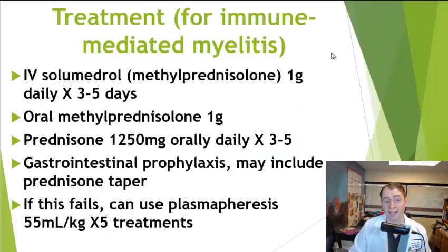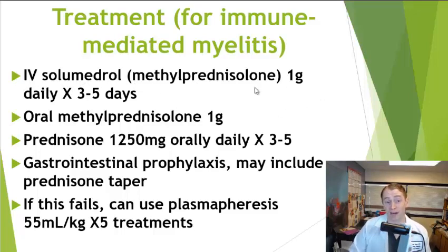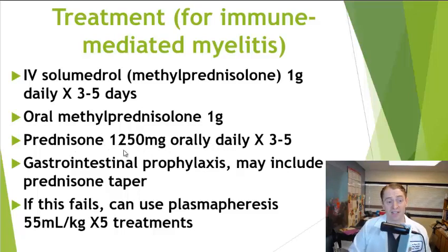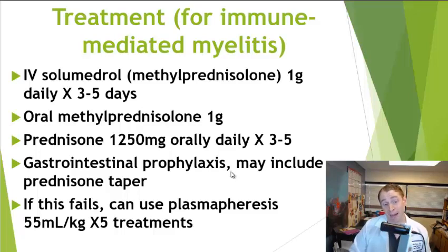The typical treatment for immune-mediated transverse myelitis is steroids to suppress the immune system and calm down inflammation. The most common drug is intravenous solumedrol or methylprednisolone, 1 gram (1,000 mg) daily for 3 to 5 days. An oral alternative is prednisone 1,250 mg (25 × 50 mg tablets) daily for 3 to 5 days, which is probably equally effective. High-dose steroids can damage the stomach, so we often give an acid blocker such as Pepcid or Protonix, and sometimes a slow steroid taper afterwards.